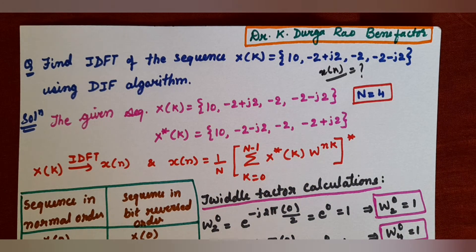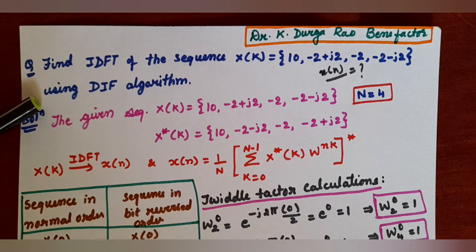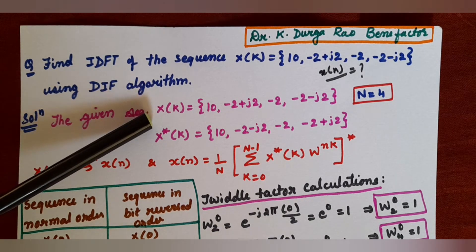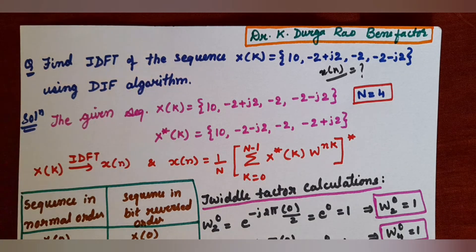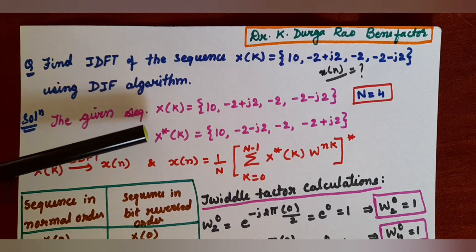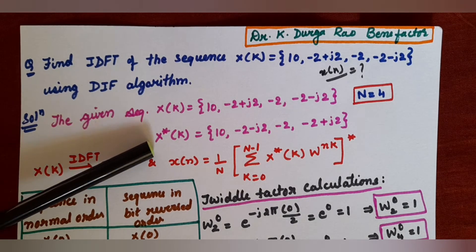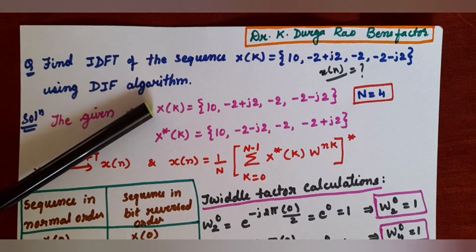You have to find the discrete time sequence using the DIF algorithm. The first step is to write the given sequence: X(k) = {10, -2+j2, -2, -2-j2}. You know the formula of IDFT as we have seen in the previous class. So, we have to find x*(k), which is the complex conjugate of the given X(k).